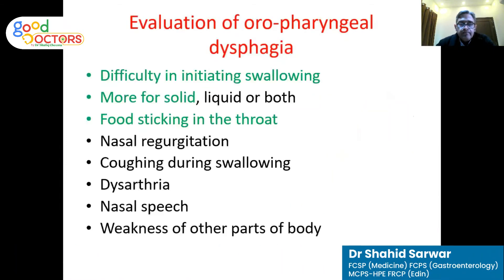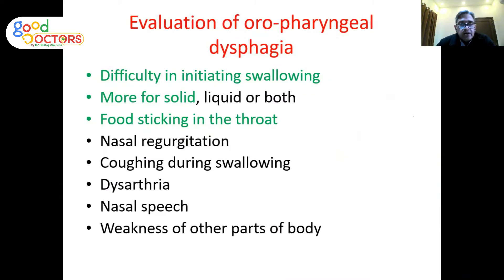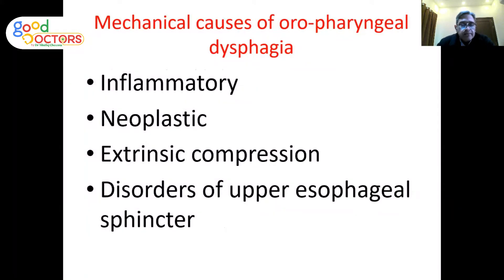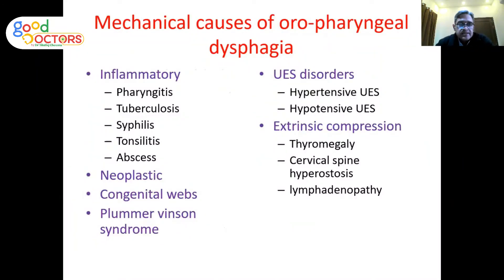If on history the patient has difficulty initiating swallowing, food stuck in the throat, dysphagia more for solids, but no nasal regurgitation, no coughing on swallowing, no dysarthria, and no weakness elsewhere, then oropharyngeal dysphagia is due to a mechanical cause — something obstructing food passage. Mechanical causes include inflammatory conditions, neoplastic lesions, extrinsic compression, macroglossia, pharyngitis, syphilis, tonsillitis, malignancies, webs, and Plummer-Vinson syndrome.